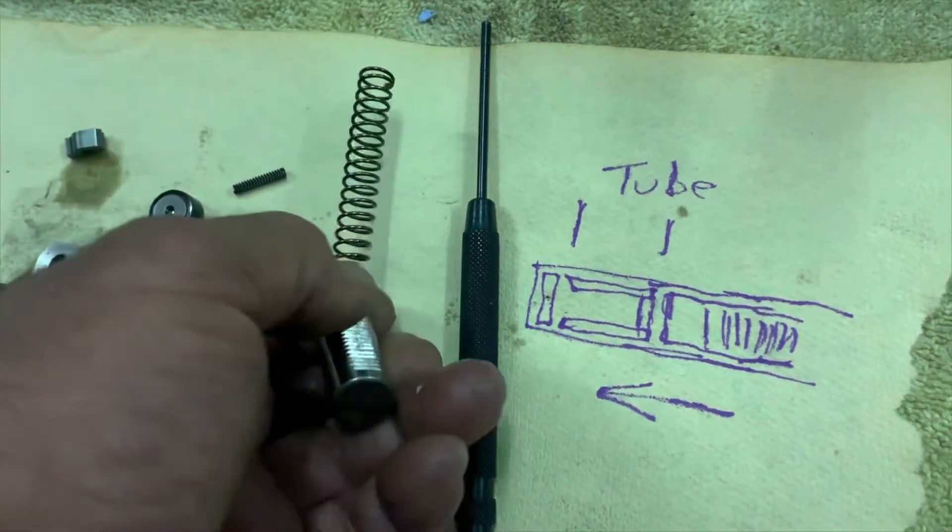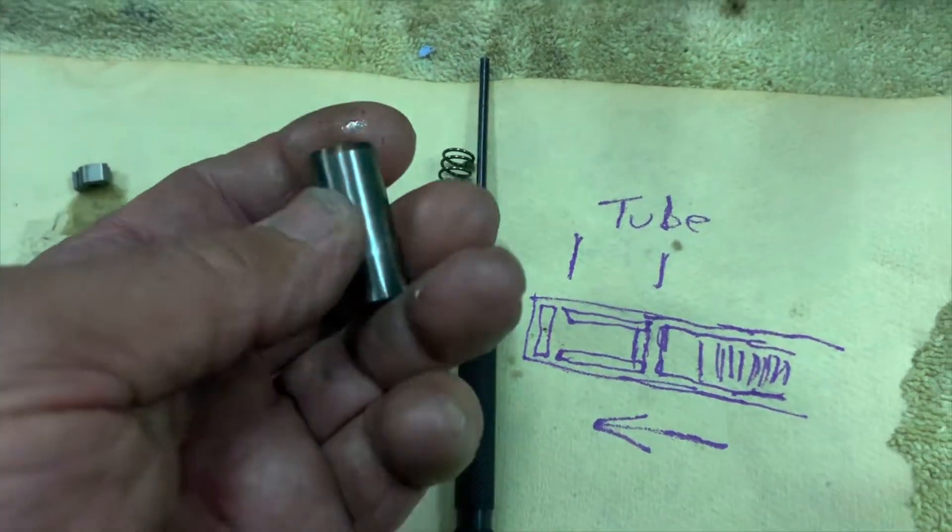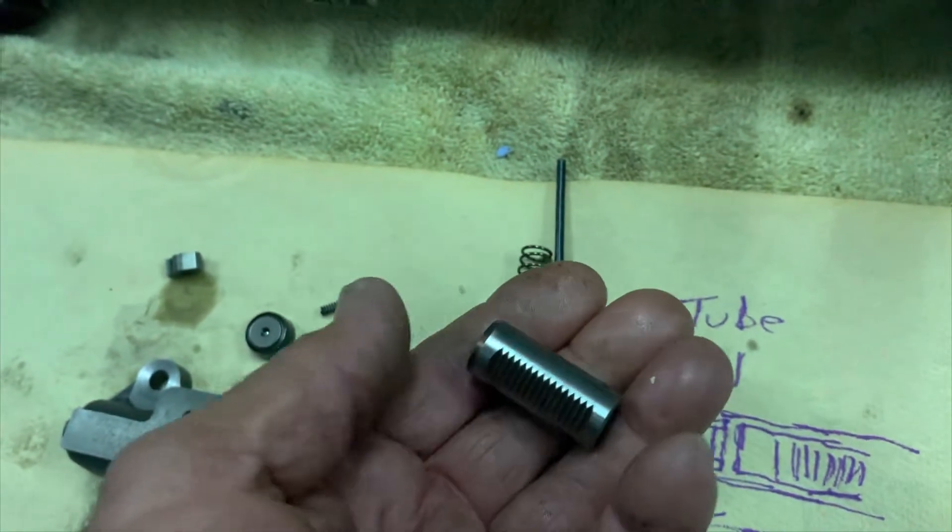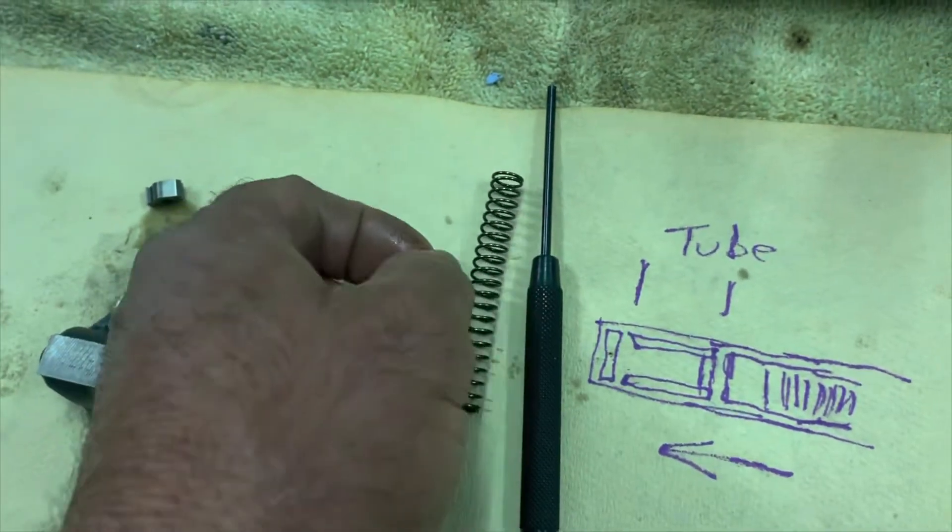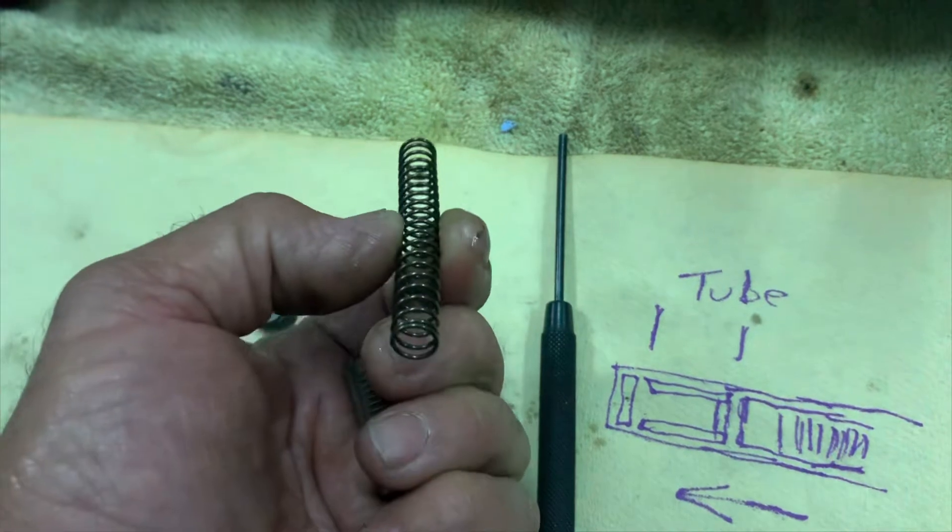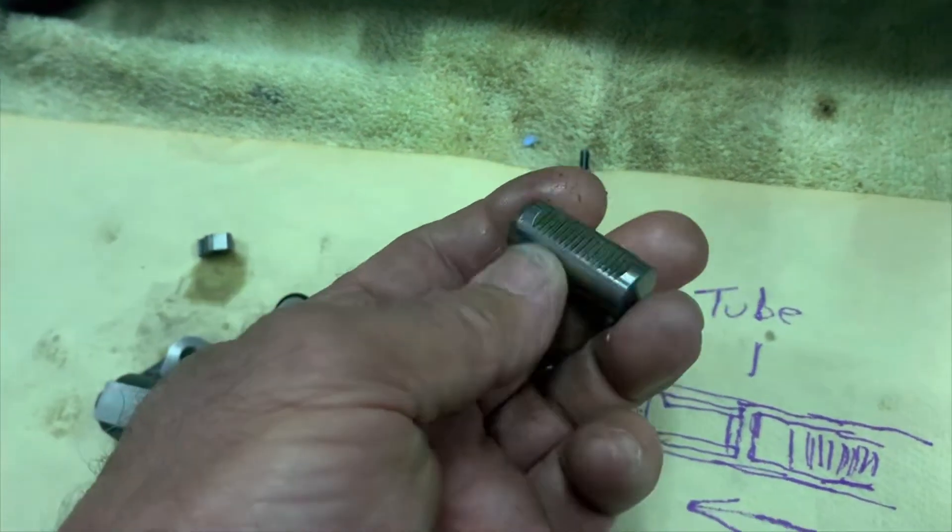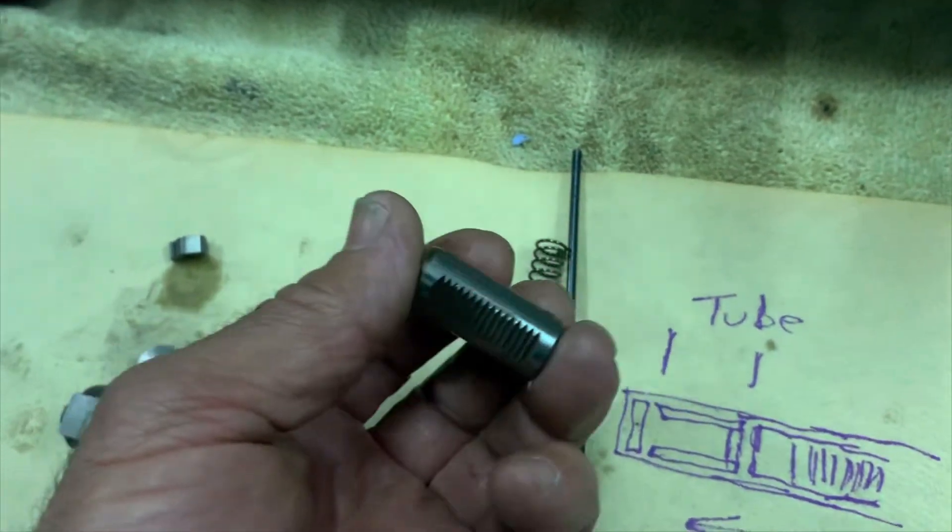And the length will be determined by how your chain sits and the correct chain tension. But yeah, I think just a tube with this diameter, exactly the same outside diameter as the piston, inside diameter no smaller than the diameter of the spring, preferably a little bit bigger inside. And the length is determined by your measurements.